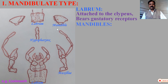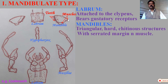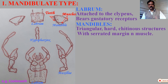Mandibles are triangular structures consisting of a serrated margin. That serrated margin helps in the mastication of food material, along with strong adductor and abductor muscles. So mandibles are used for mastication.